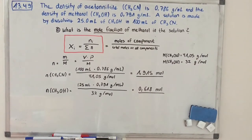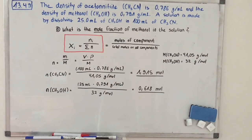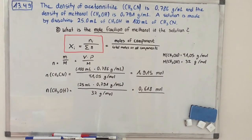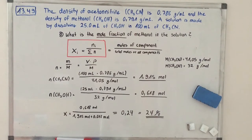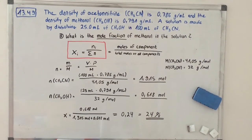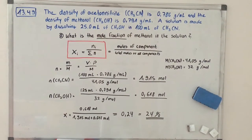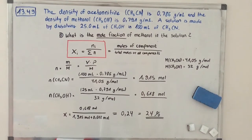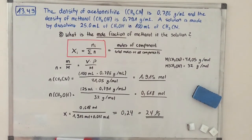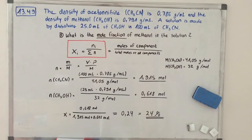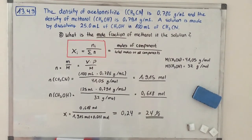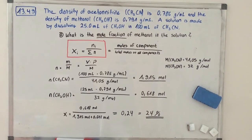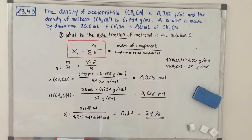Now we have everything to calculate the mole fraction of methanol using the formula marked in red. We take 0.618 mol of methanol divided by the total moles of all components — acetonitrile plus methanol. The result is 0.24, which is 24%. So the mole fraction of methanol in the solution is 24%.